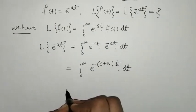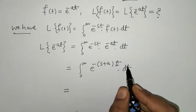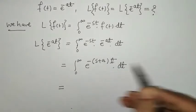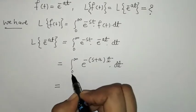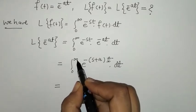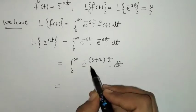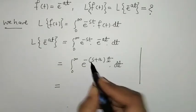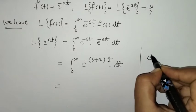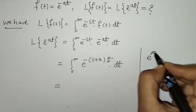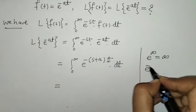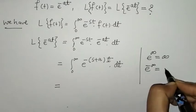Now we have to find the integration. After the integration we have to put in the limits 0 to infinity. Here, e raised to infinity is infinity and e raised to minus infinity is 0.